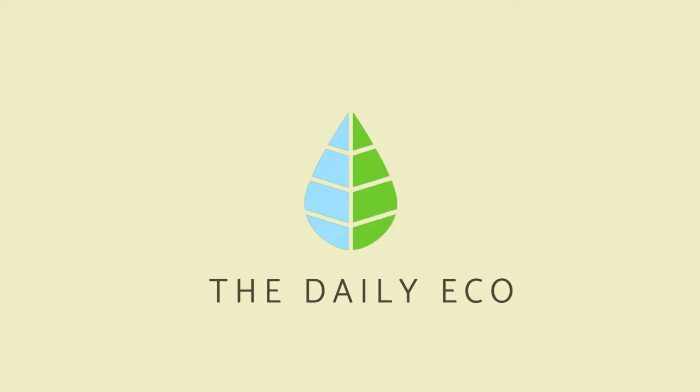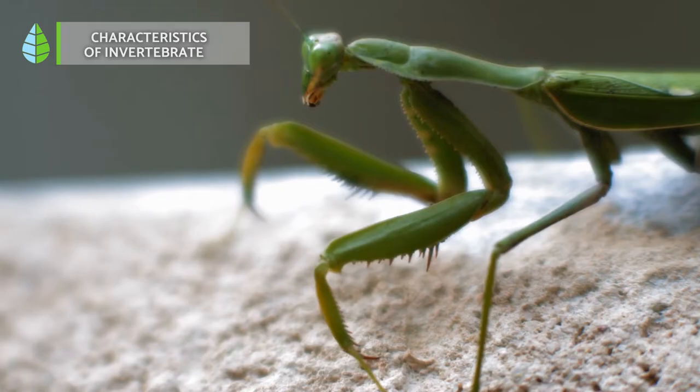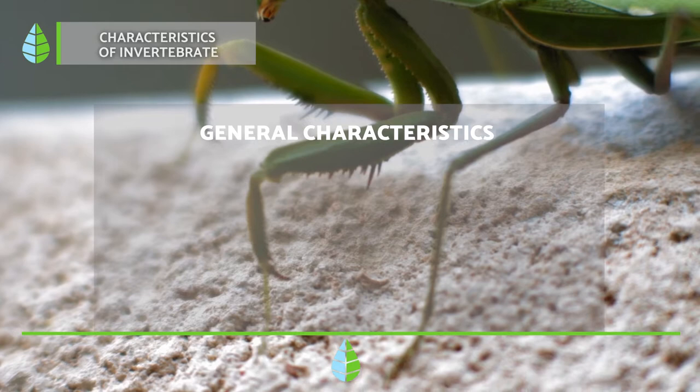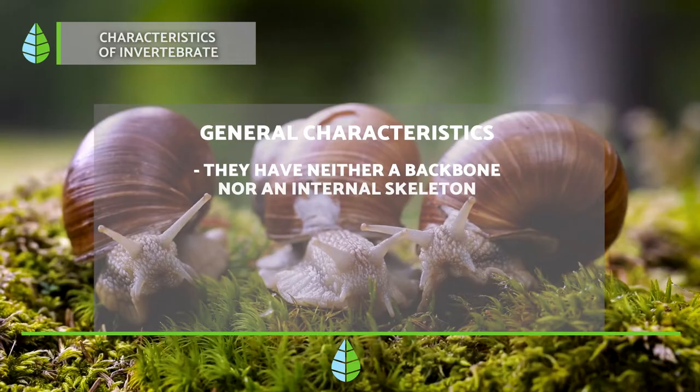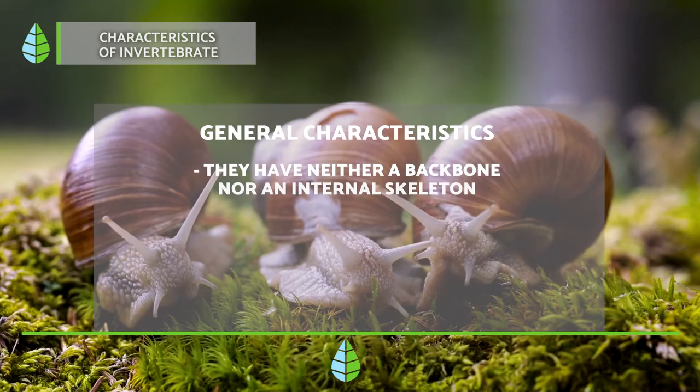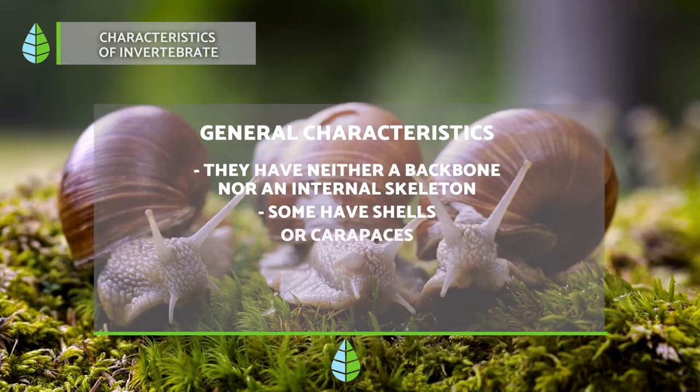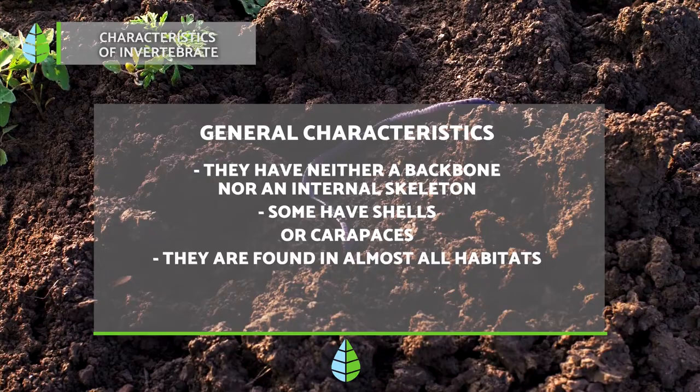Characteristics of invertebrates: unlike vertebrates, they have no backbone or internal skeleton, so they can be said to be boneless animals. They are usually small animals and many of them have protective structures such as shells or carapaces. They are also found in almost all habitats on Earth, from high-temperature water in hydrothermal vents to the depths of the oceans or the frozen surface of Antarctica.